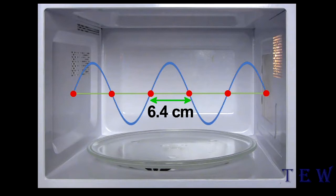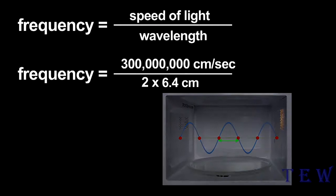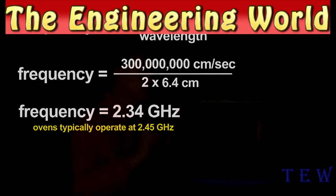Using that wavelength, I can estimate the microwave radiation's frequency. The frequency is related to the wavelength by the speed of light. I get an answer that only has a 4 or 5 percent error, not bad for this primitive measurement.